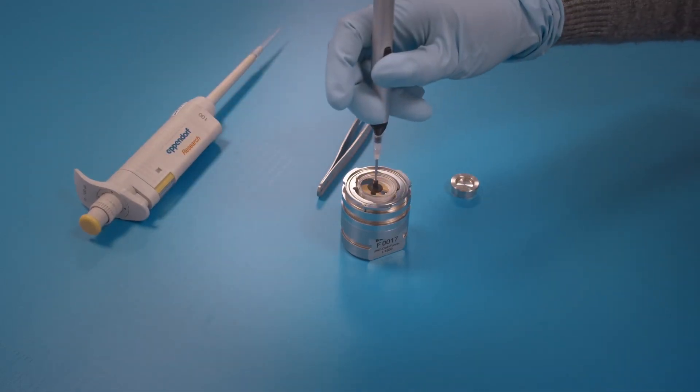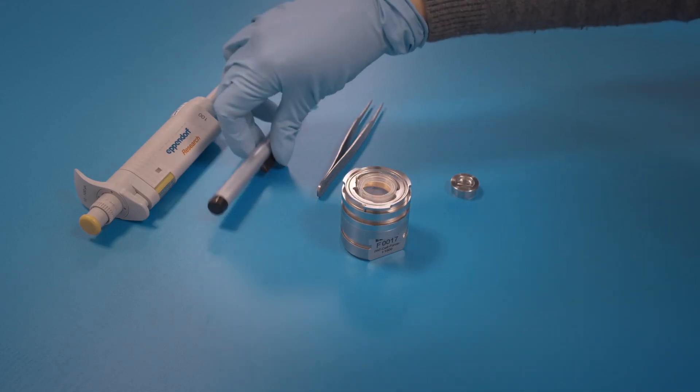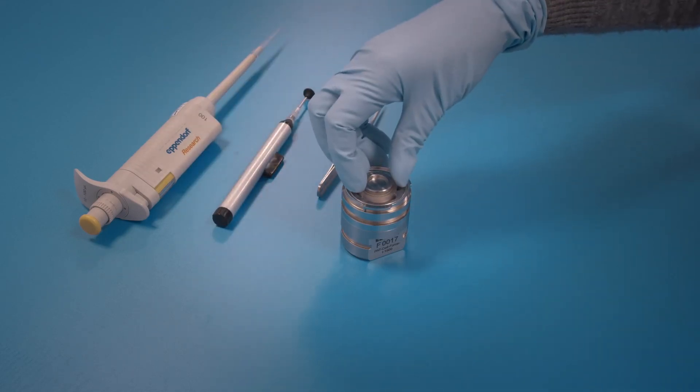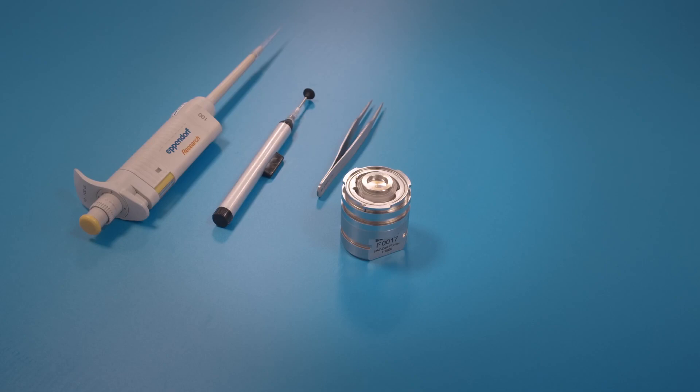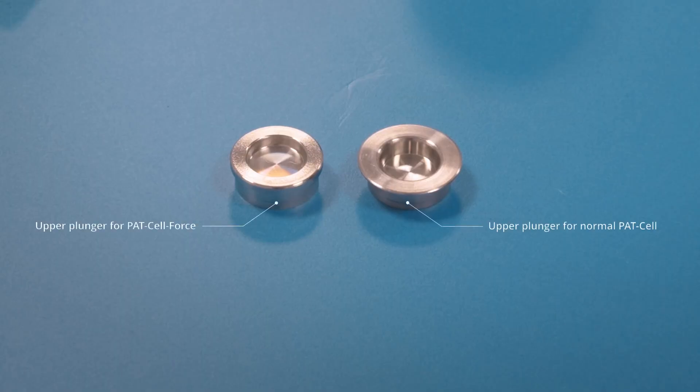Put on top the upper electrode and then the upper plunger. This upper plunger is different from the standard plunger otherwise used. Don't mix those plungers up.